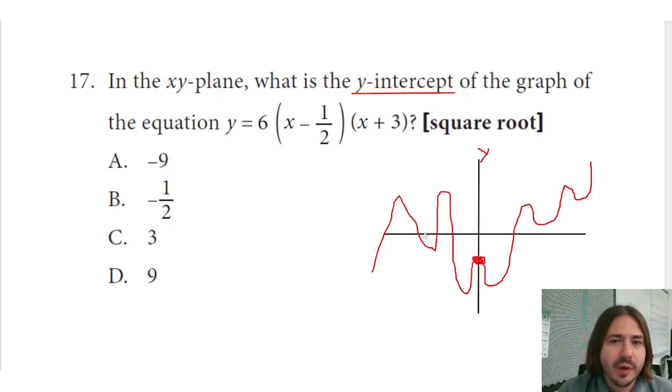And the key thing to understand about a y-intercept is that no matter where the function crosses that y-axis, every single point along this line is going to have something in common, and that is that its x-coordinate is 0. So if you imagine, the point at the origin is (0, 0), you have (0, 1), (0, 2), (0, 3).